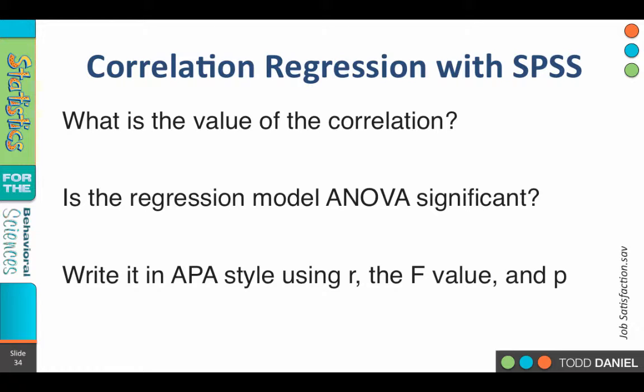First of all, what was the value for the correlation? That's the R value. You should have a positive .65. Again, all of these numbers come from the output in SPSS. Next, is the regression model ANOVA significant? Yes, it is, at less than .001. That means that burnout is a significant predictor of job satisfaction. How would you write up this ANOVA?